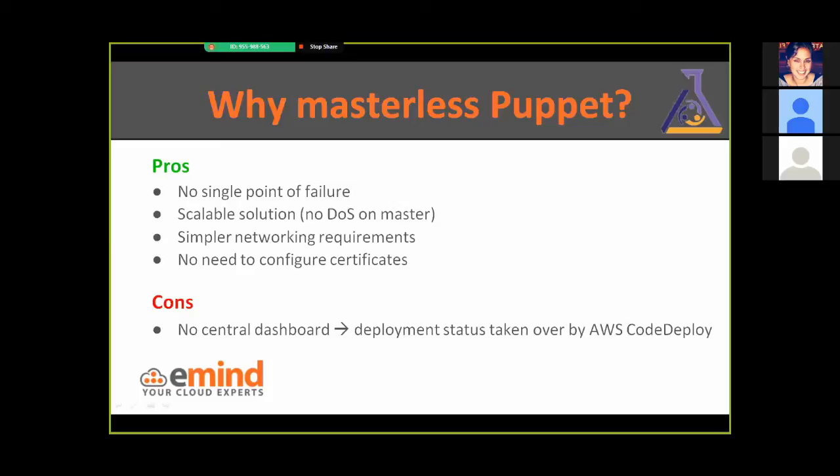The only drawback is that there's no central dashboard. Puppet Enterprise works with a master and provides a dashboard giving reports on deployments, gathering information from hosts connecting to the master — and this is something you lose. On the other hand, we can look at deployment status via CodeDeploy in the Amazon console, which provides some solution for that.